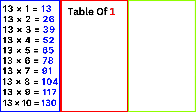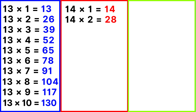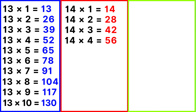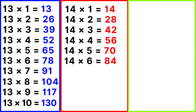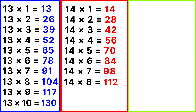Table of 14: 14 ones are 14, 14 twos are 28, 14 threes are 42, 14 fours are 56, 14 fives are 70, 14 sixes are 84, 14 sevens are 98, 14 eights are 112, 14 nines are 126.